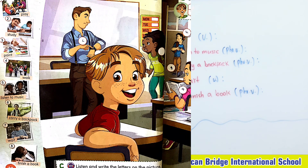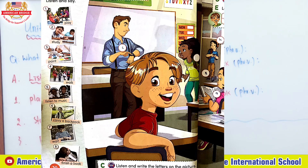Play means to spend time doing enjoyable things, such as using toys and taking part in games. Study functions as a verb meaning to spend time learning about particular subjects. Paint functions as a verb meaning to cover a wall or an object with paint — I think we learned this already in the previous video. Walk functions as a verb meaning to move or go somewhere by putting one foot in front of the other on the ground.